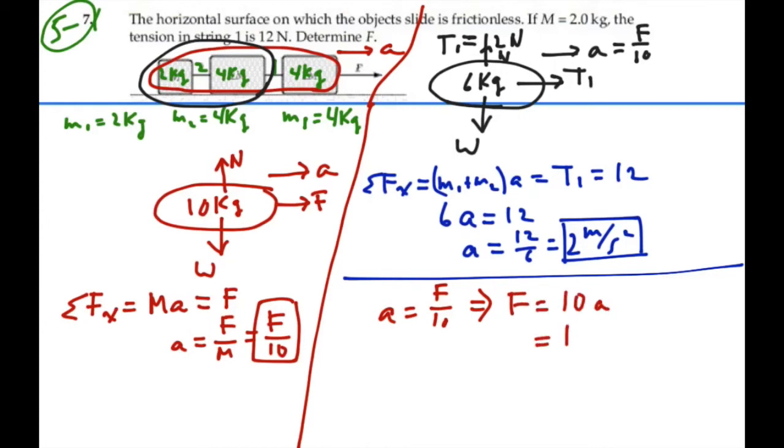And if acceleration is 2, our force F is equal to 20 newtons. So the force F is 20 newtons if the tension T1 is equal to 12 newtons. And that's the answer we're looking for.